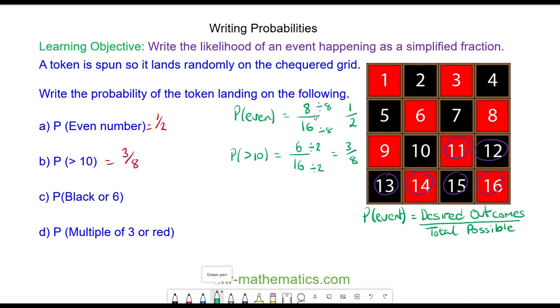Question c: the probability of black or 6. We have 1, 2, 3, 4, 5, 6, 7, 8 which are black, plus the one that is 6, so that is 9 out of 12, which can be simplified by dividing both by 3. So that is 3/4.